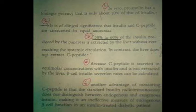Three, 50 to 60% of the insulin produced by the beta cells is extracted by the liver without ever reaching the systemic circulation. In contrast, the liver doesn't extract C-peptide. Because C-peptide is secreted in equimolar concentrations with insulin and is not extracted by the liver, beta cell insulin secretion rate can be calculated. Another advantage of measuring C-peptide is that standard insulin radioimmunoassay does not distinguish between endogenous and exogenous insulin, making it an ineffective measure of endogenous beta cell function in an insulin-treated diabetic patient.